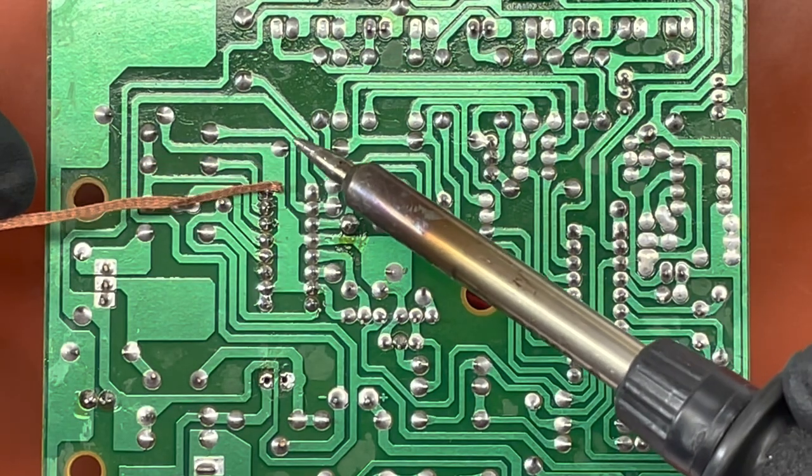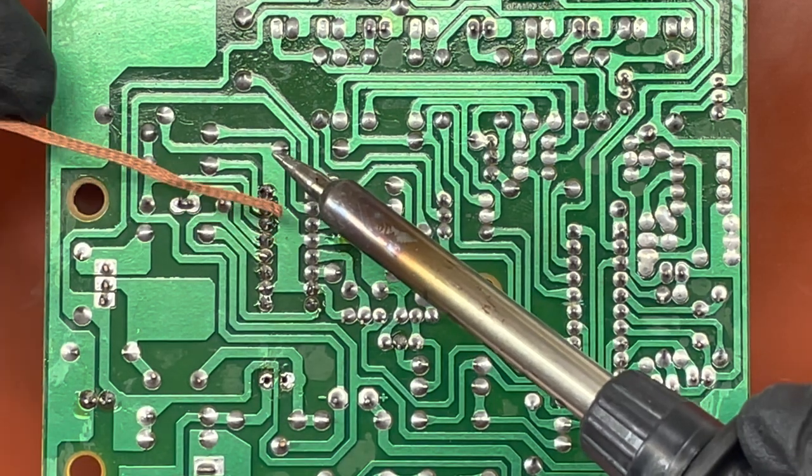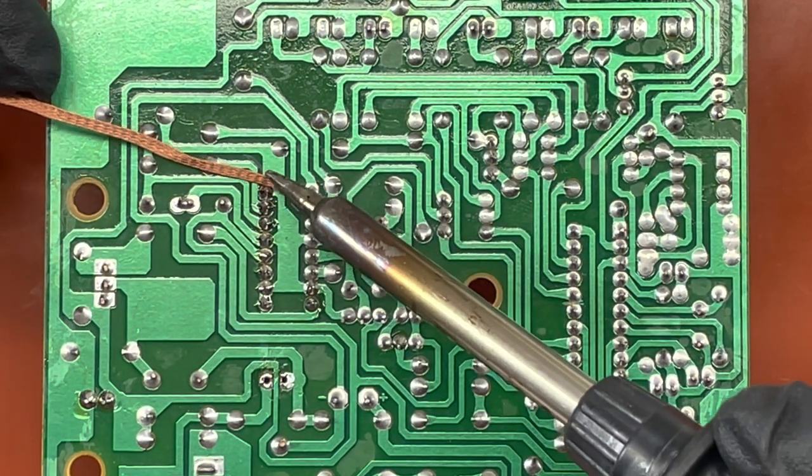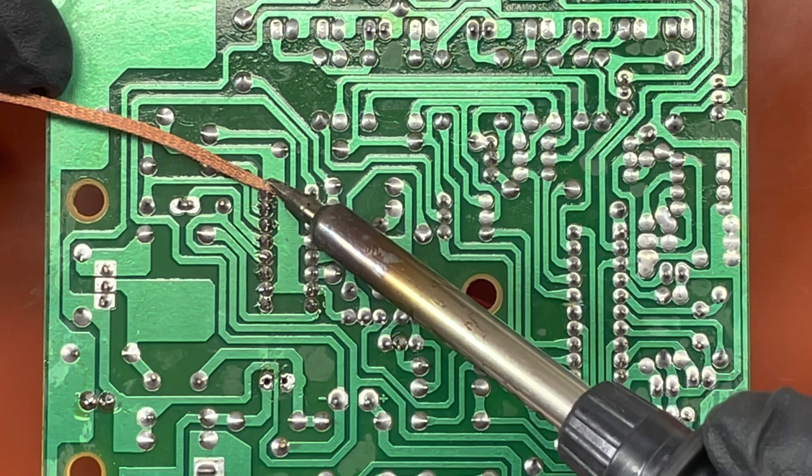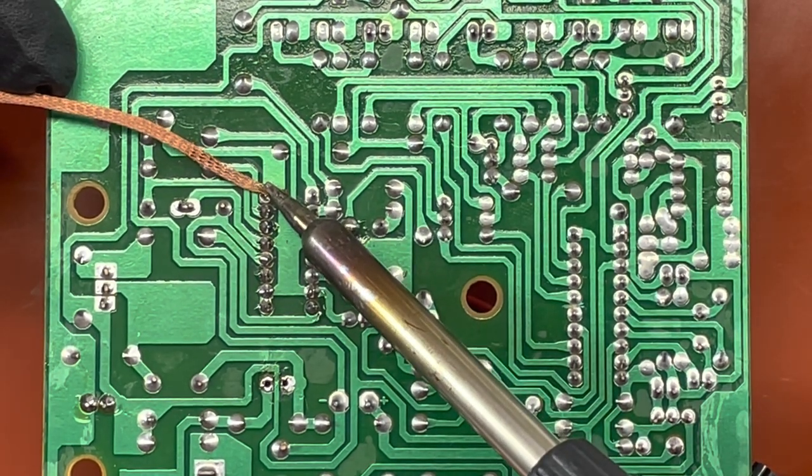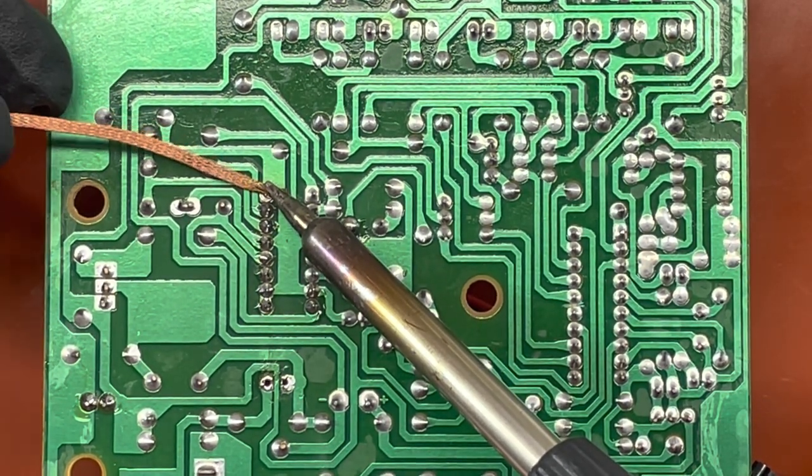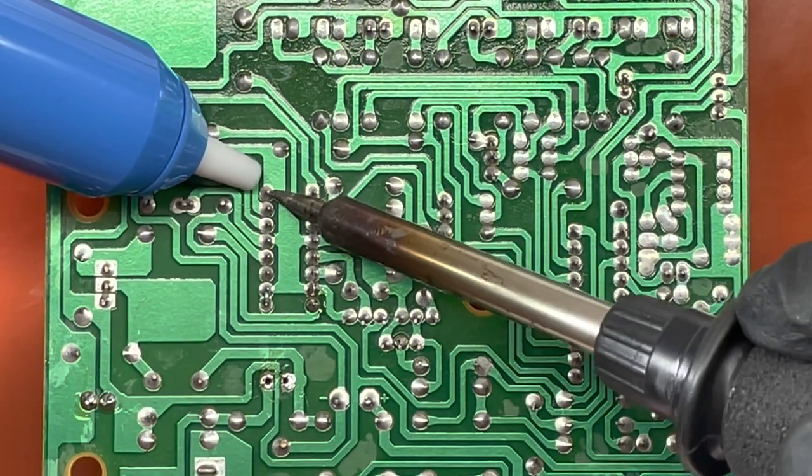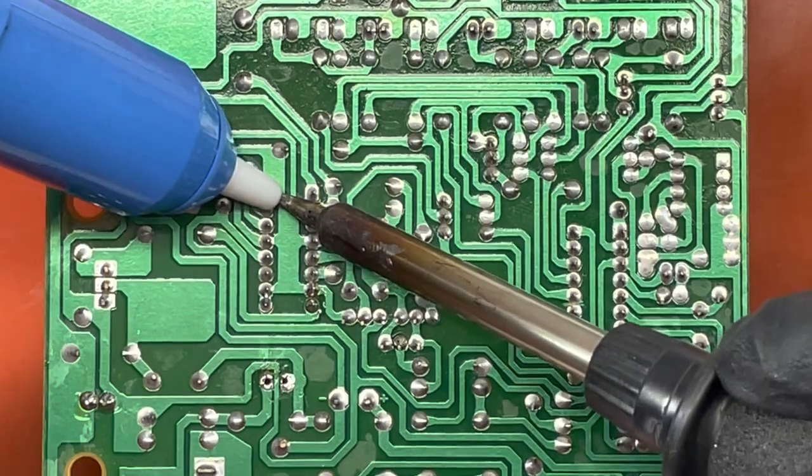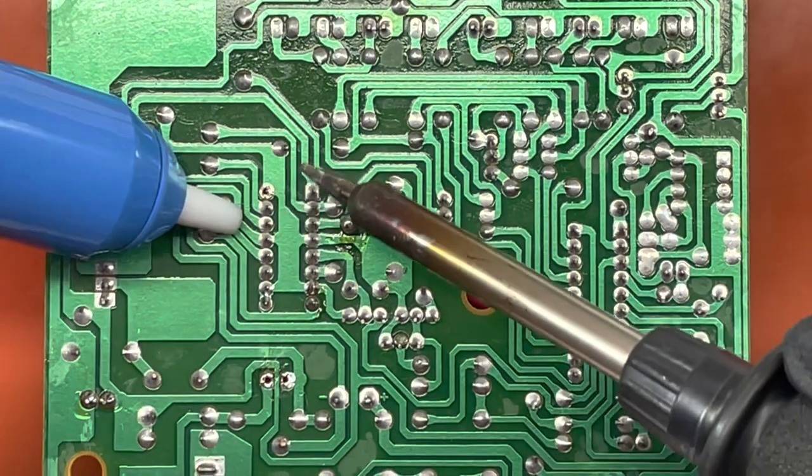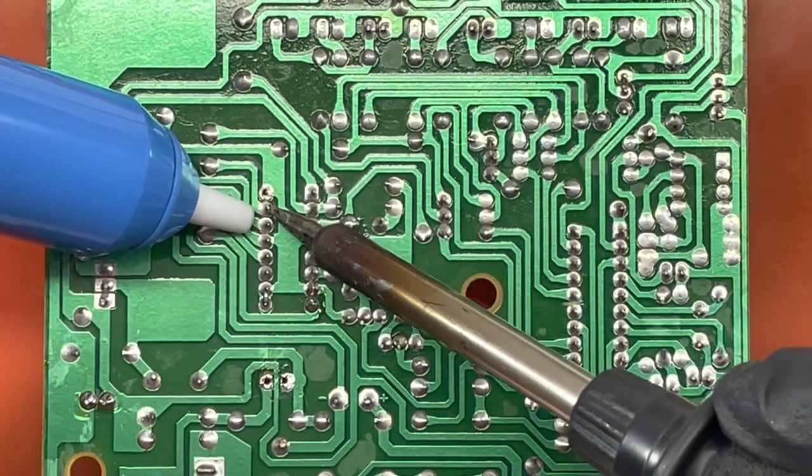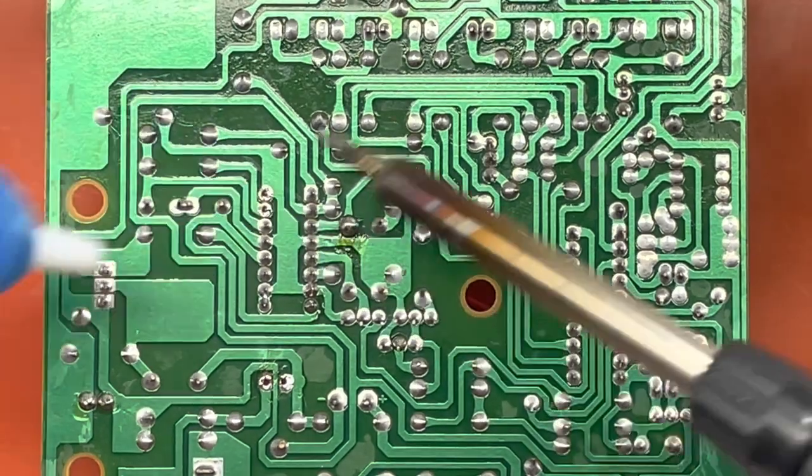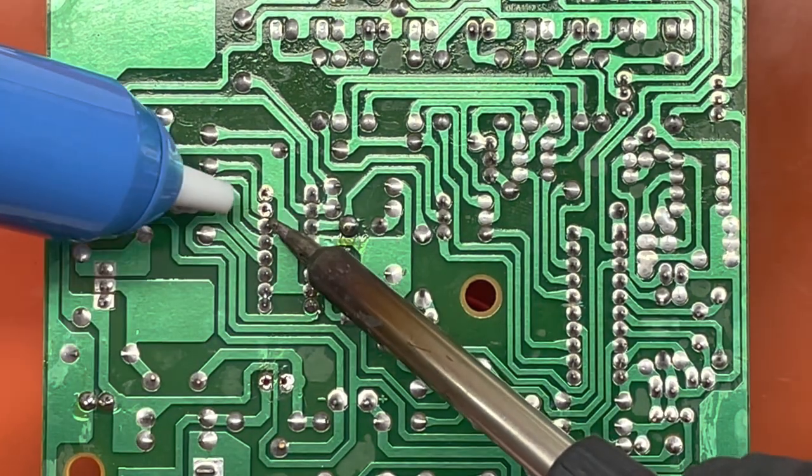With a solder wick, rest on the solder connection with a well-tinned tip. When it gets in a molten state, you will see the solder wick up into the braid. If using a desoldering tool, load the tool, rest the well-tinned tip on the solder connection until molten, and position desoldering tool tip over the molten solder and activate the desoldering tool.